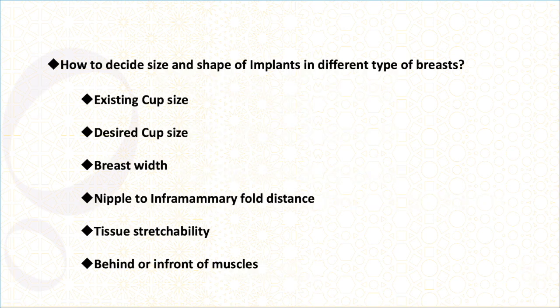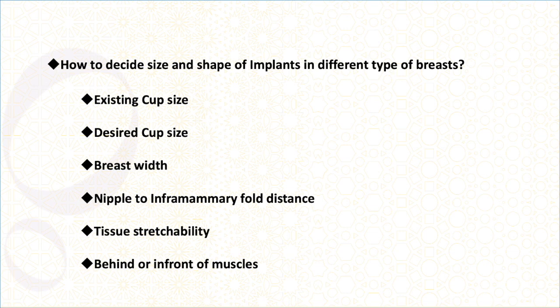How do you decide the size and shape of implants for different types of breasts? We need to see what the existing cup size is, and take into consideration the desired cup size. Then we measure the breast width, which is one important determinant, and the distance from the nipple to the inframammary fold or breast crease. We also check tissue stretchability, and finally consider whether the implant will be placed behind or in front of the muscle.